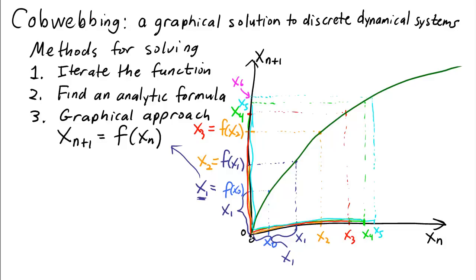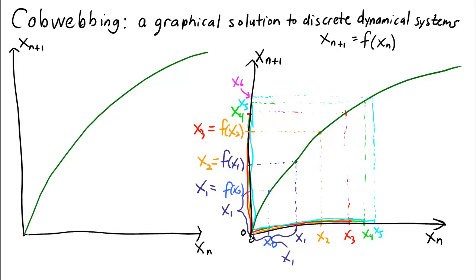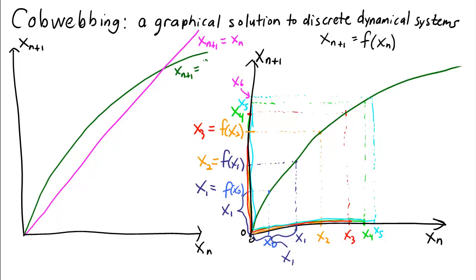Let's try this one more time using a shortcut to make the graphical approach even easier. We add one more thing to our graph: the diagonal line where x_{n+1} = x_n, or equivalently y = x. We'll also label the other curve as x_{n+1} = f(x_n).